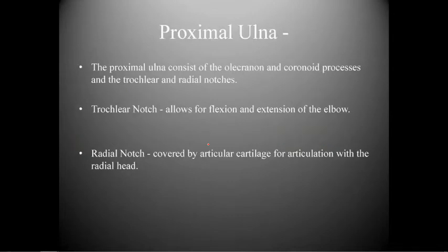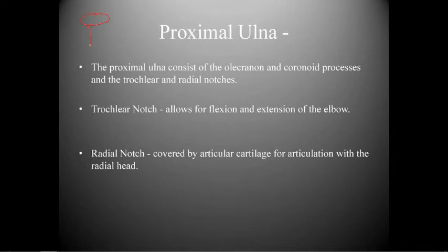The proximal ulna consists of the olecranon and coronoid processes, and the trochlear and radial notches. The trochlear notch allows for flexion and extension of the elbow. The radial notch is covered by articular cartilage for articulation of the radial head, allowing supination so the radial head can rotate within it.